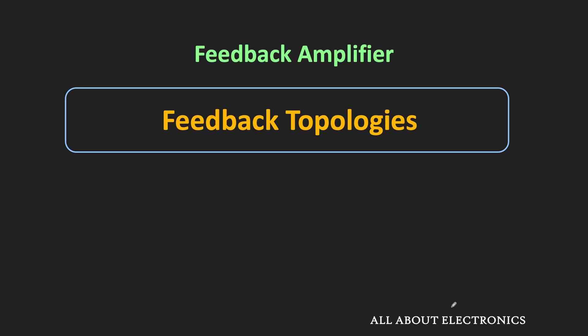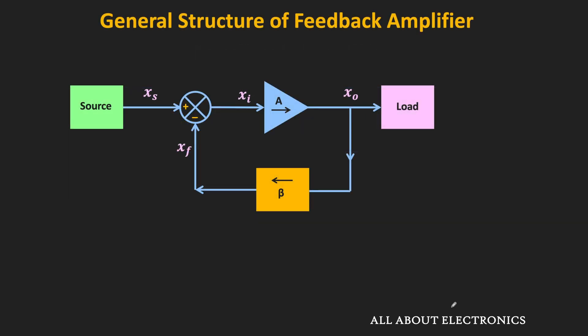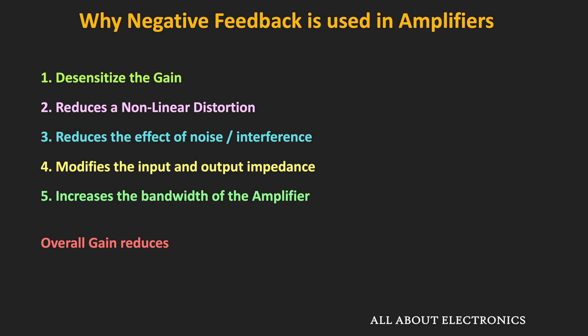Hey friends, welcome to the YouTube channel all about electronics. In this video, we will see the different feedback topologies for the feedback amplifier. In the previous video, we have seen the general structure of the feedback amplifier and the effect of negative feedback on the different characteristics of the amplifier. One of the properties of negative feedback is that it modifies the input and output impedance of the amplifier, and this modification depends on the feedback topology.